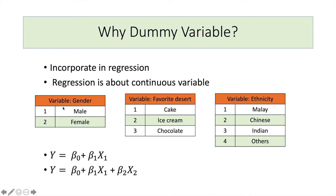For example, it doesn't make any sense to say gender increases, because gender is male and female — there is no direction. Similarly, you can't say favorite dessert increases or decreases, because dessert consists of cake, ice cream, and chocolate. You can't find a mean between them. The same thing goes to ethnicity — we don't say ethnicity increases or decreases.